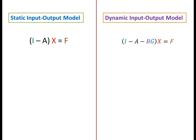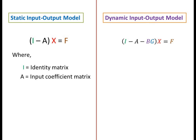The Static Input-Output Model is defined by (I minus A) into X equal to F, where I is the identity matrix, A is the input coefficient matrix, X is the output vector, and F is the final demand vector.